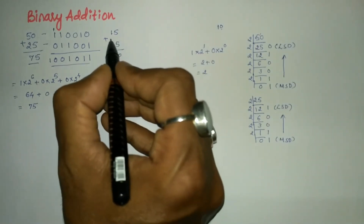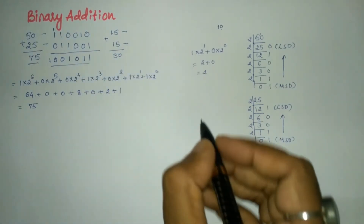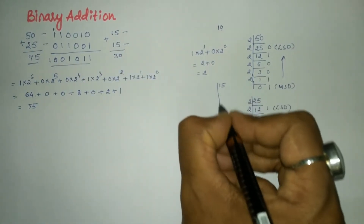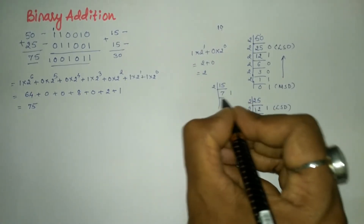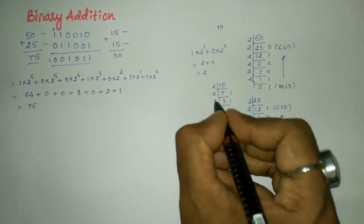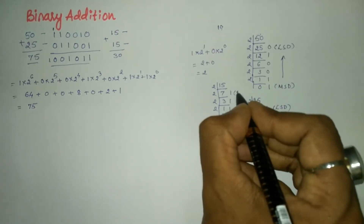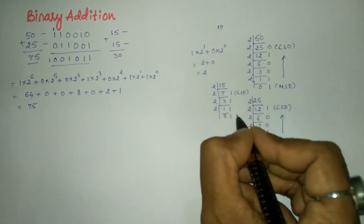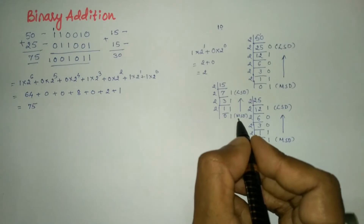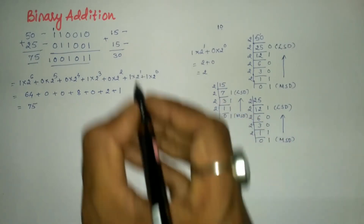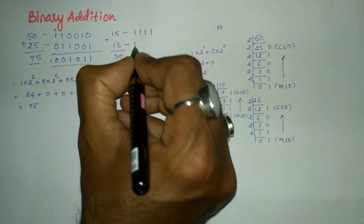Now let us convert 15 into binary. Divide 15 by 2: 2 into 7 is 14, remainder 1; 2 into 3 is 6, remainder 1; 2 into 1 is 2, remainder 1; quotient 1 becomes the remainder. The first remainder is the least significant digit and the last is the most significant digit. Writing from most significant digit to least significant digit gives 1 1 1 1.